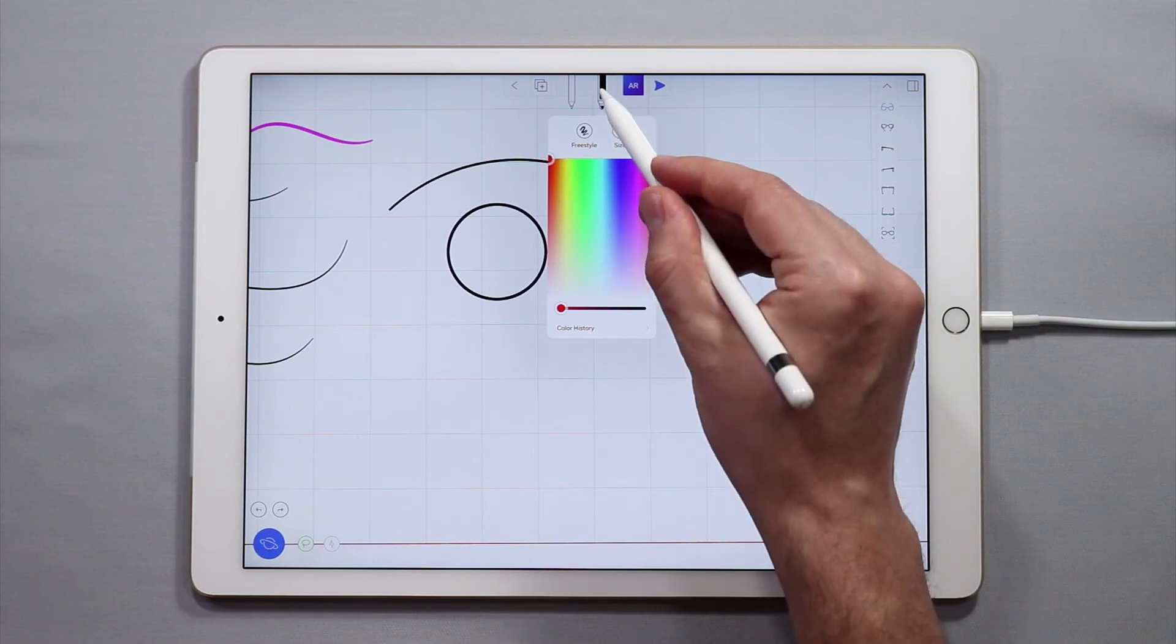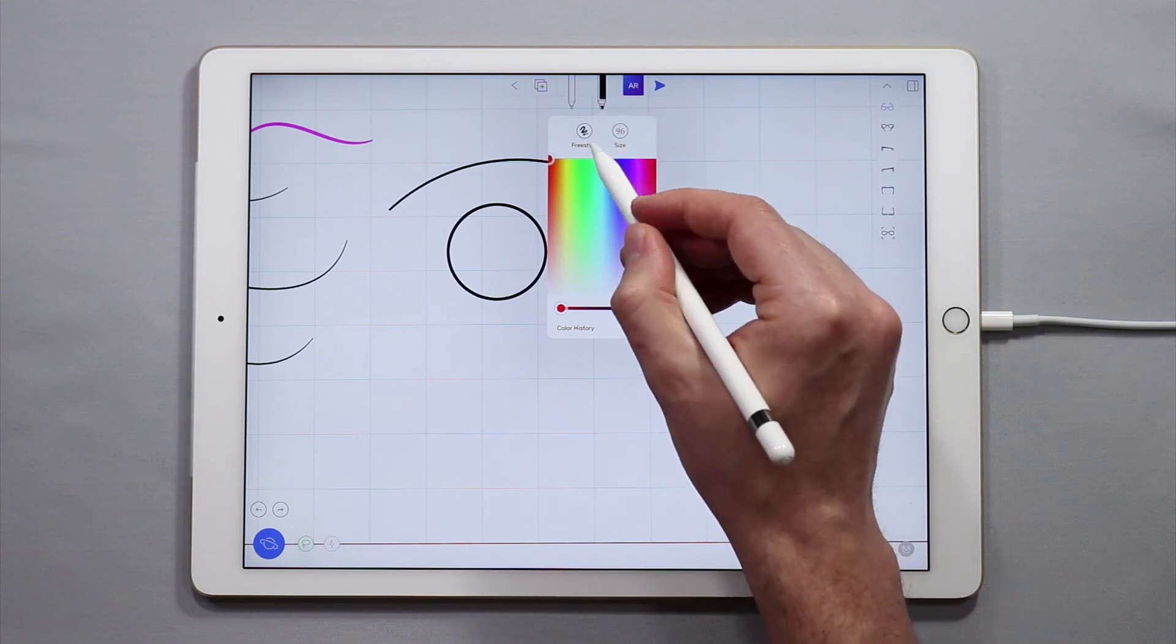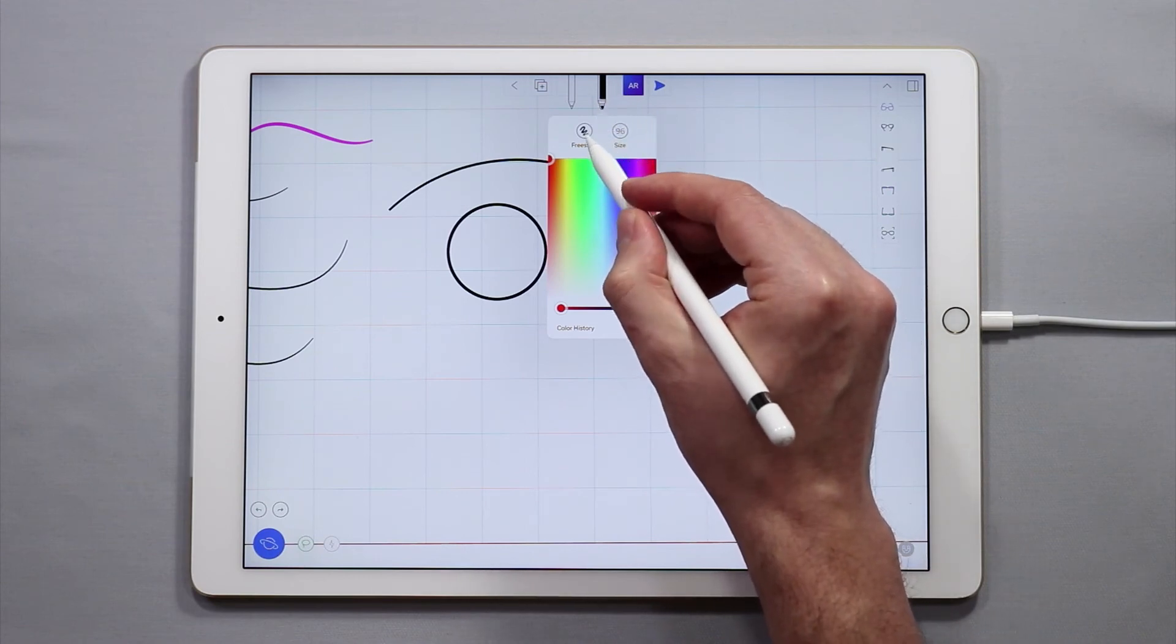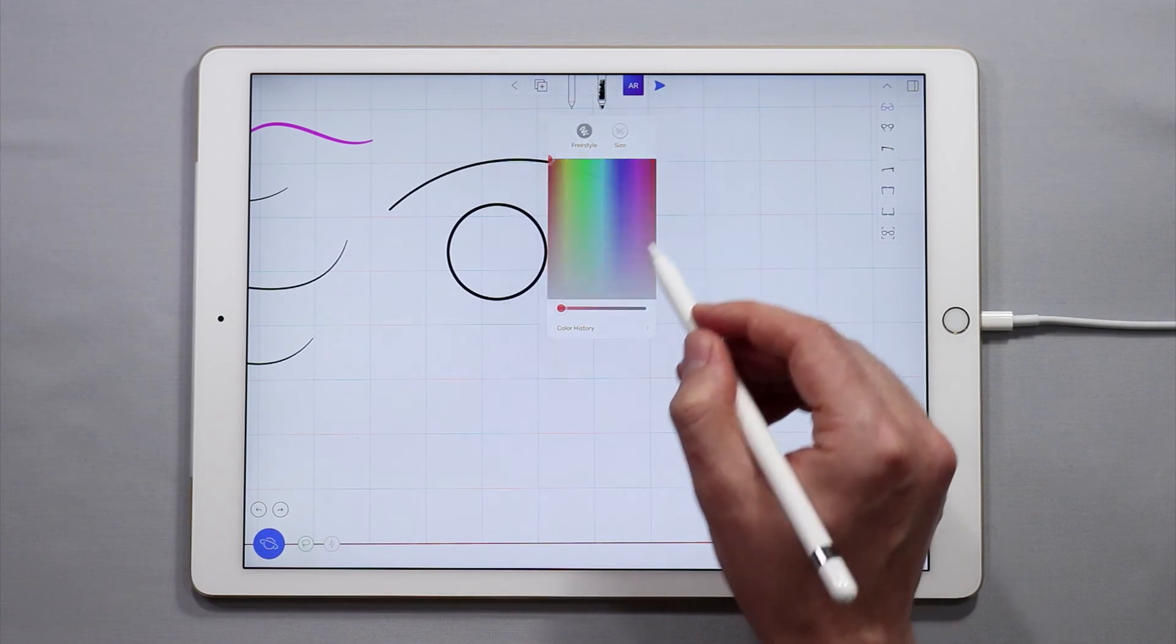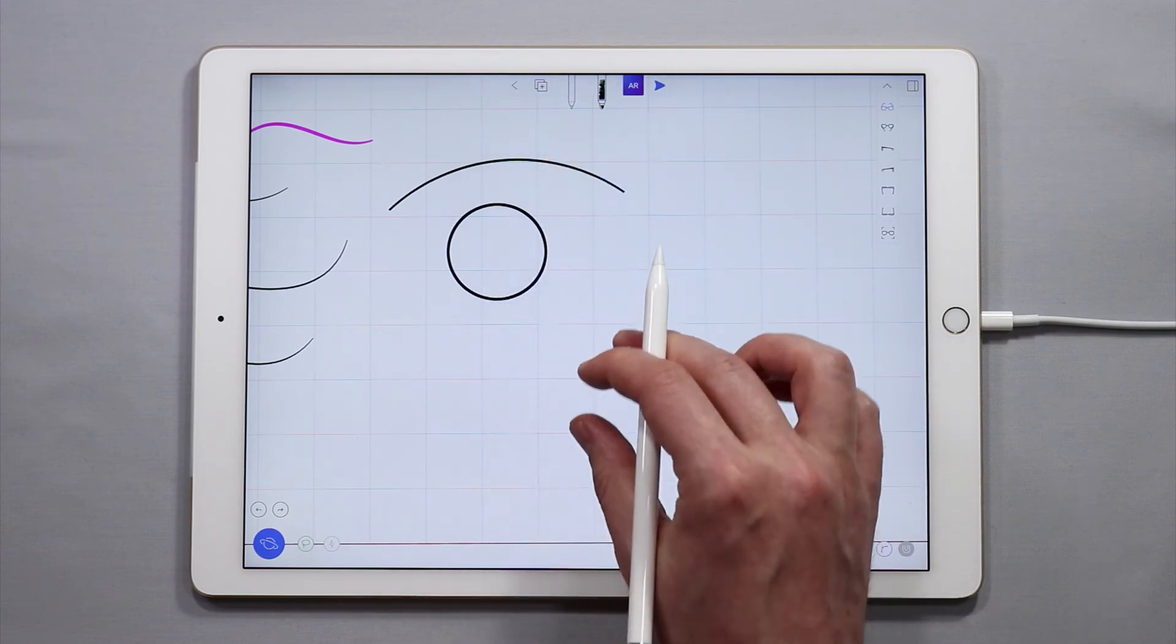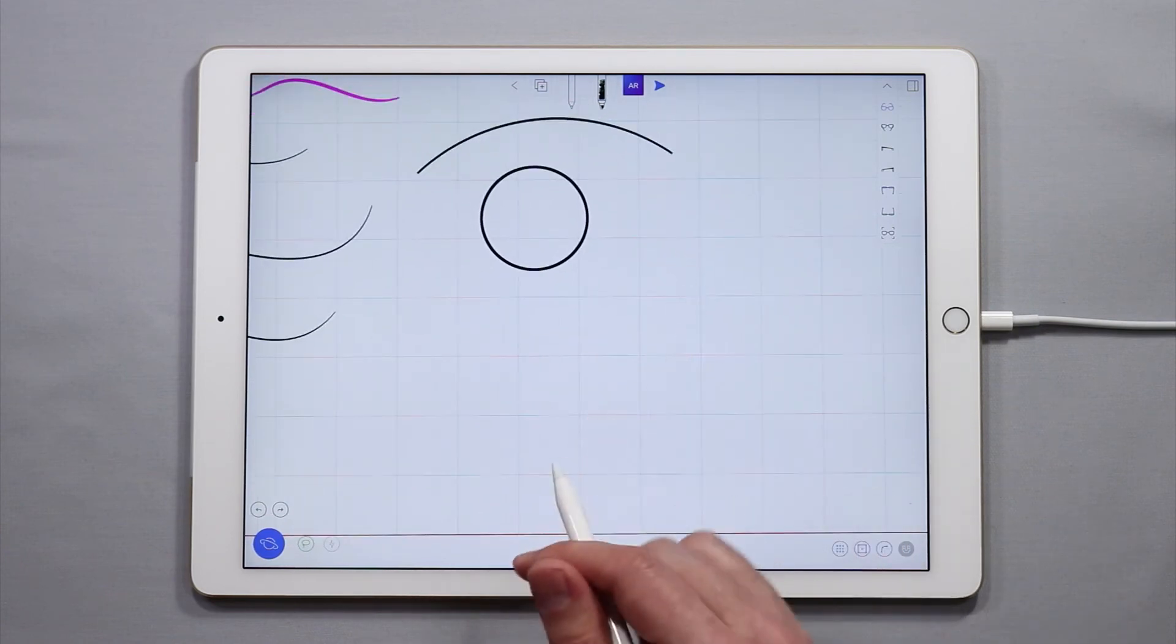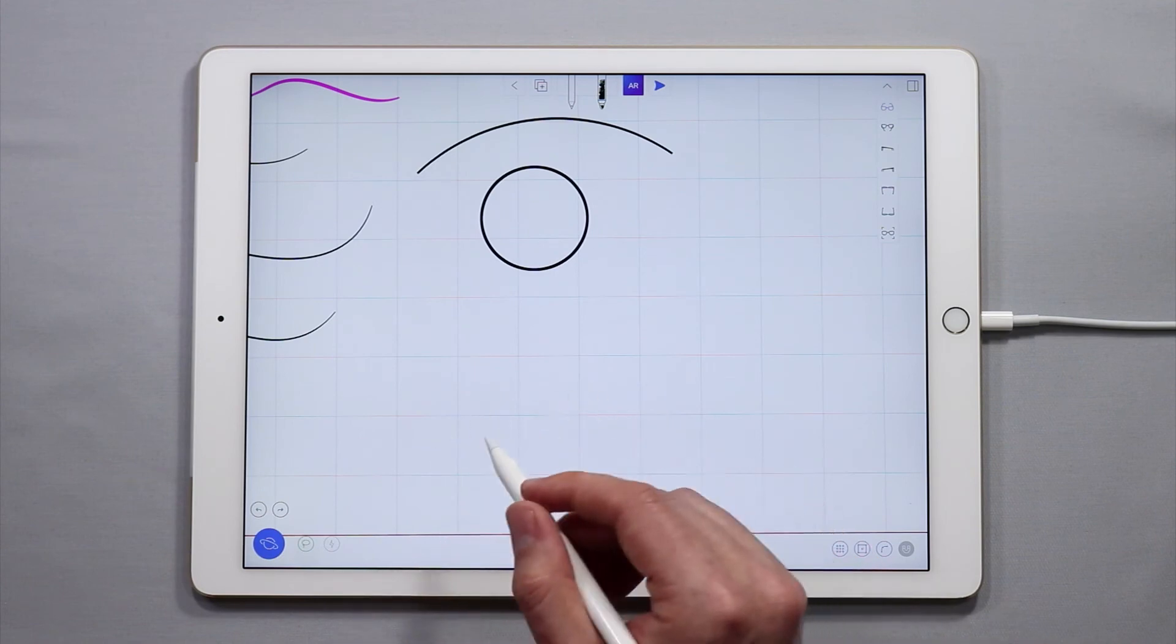The freestyle mode exists under the pen or pencil tool and when you toggle it on by tapping freestyle, this makes the lines that you sketch non-NURBS. They're basically just what we call a polyline.